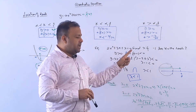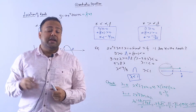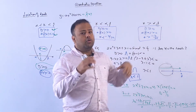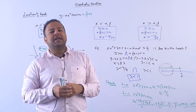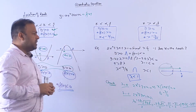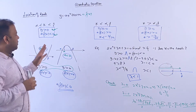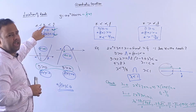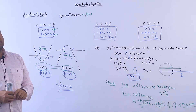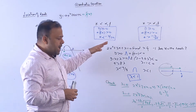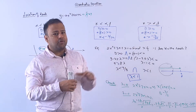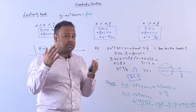Both conditions must be satisfied simultaneously, so we take the intersection. One condition says λ < 9/8, the other says λ < 1. The common part — the intersection — is λ < 1. So if λ < 1, one root will be less than −1 and one root will be greater than −1.